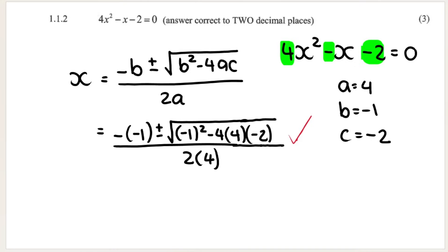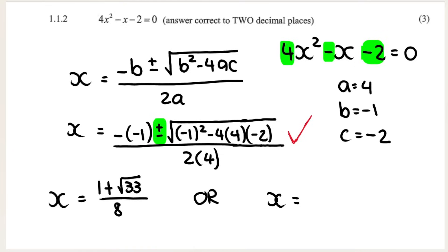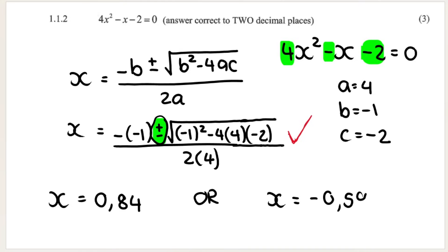To get one solution, we use the plus sign in the formula and get our answer. The question wants it correct to two decimal places, so in decimal form our answer is 0.84. Then to get the second answer, change that to a minus on your calculator, and we get negative 0.59. You get one mark for each correct solution.